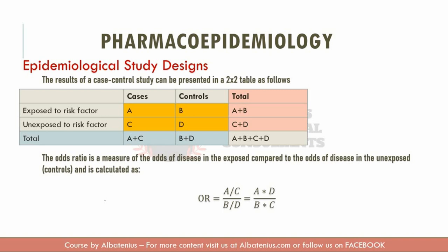Case control studies compare rates of exposure to risk factors for a specific condition between subjects who have that condition — called the cases — and subjects who do not have the condition — called the controls. In this table, cases are subjects who have a certain condition and controls are those who don't.